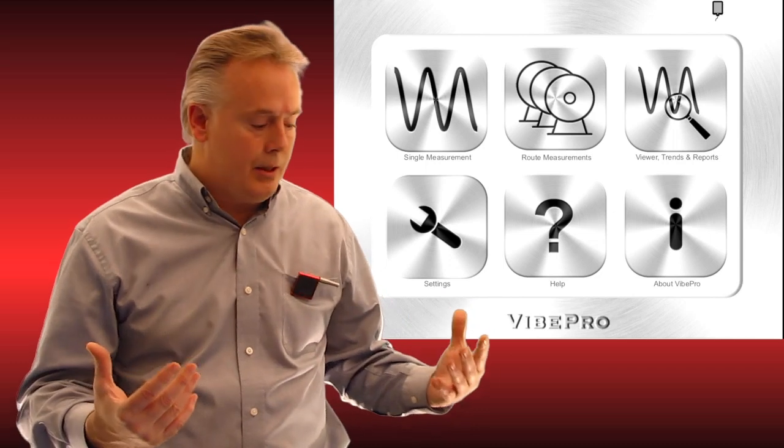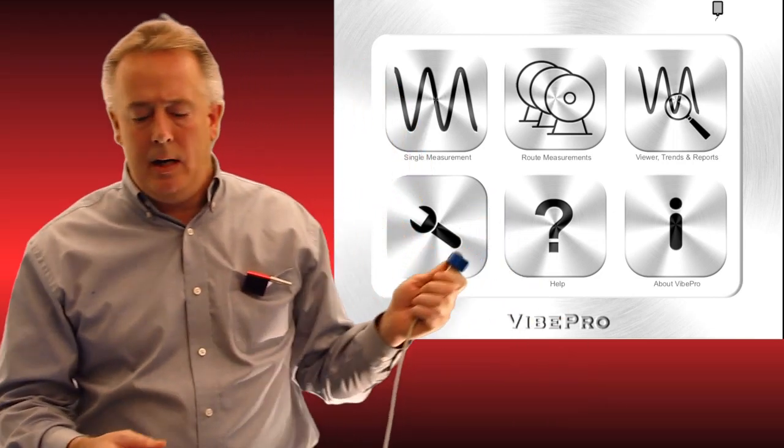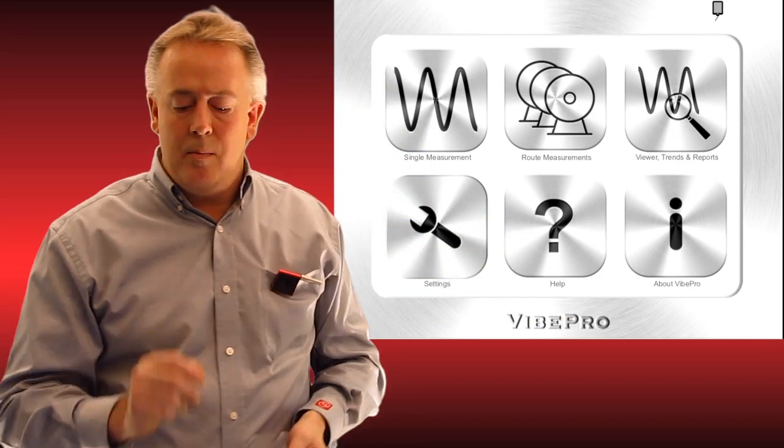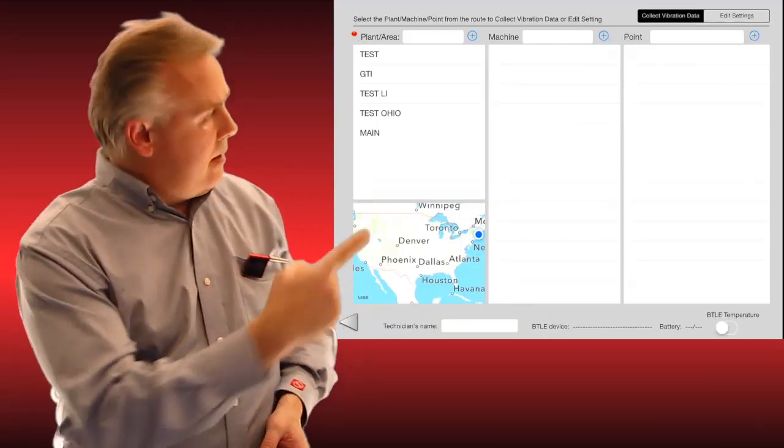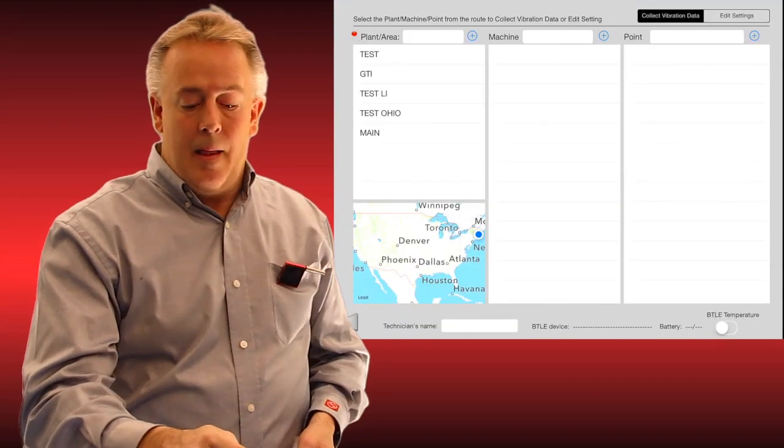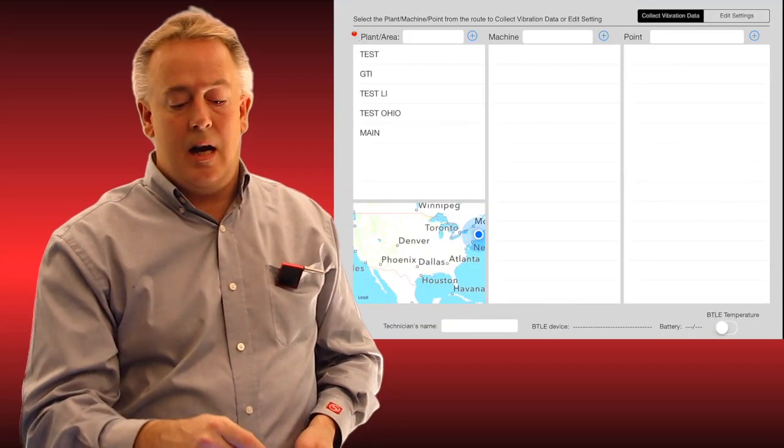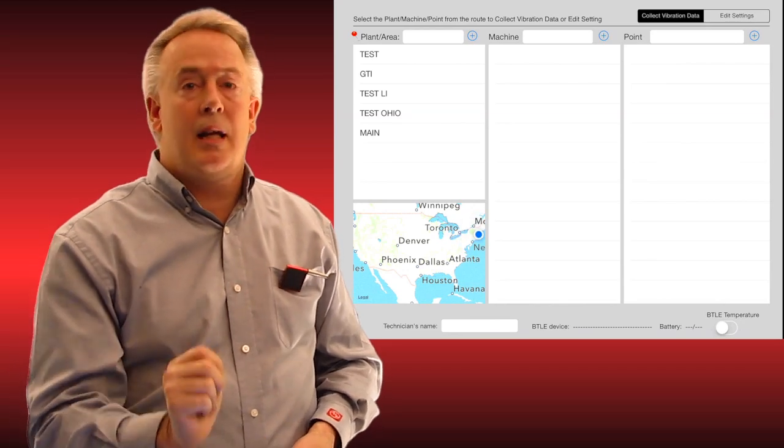I'm going to simulate actually taking a reading. I have an accelerometer right here next to me. I'm going to open the route measurement mode and you can see I have a hierarchy behind me of test GTI. I'm just going to hit the first. That's our plants and areas.